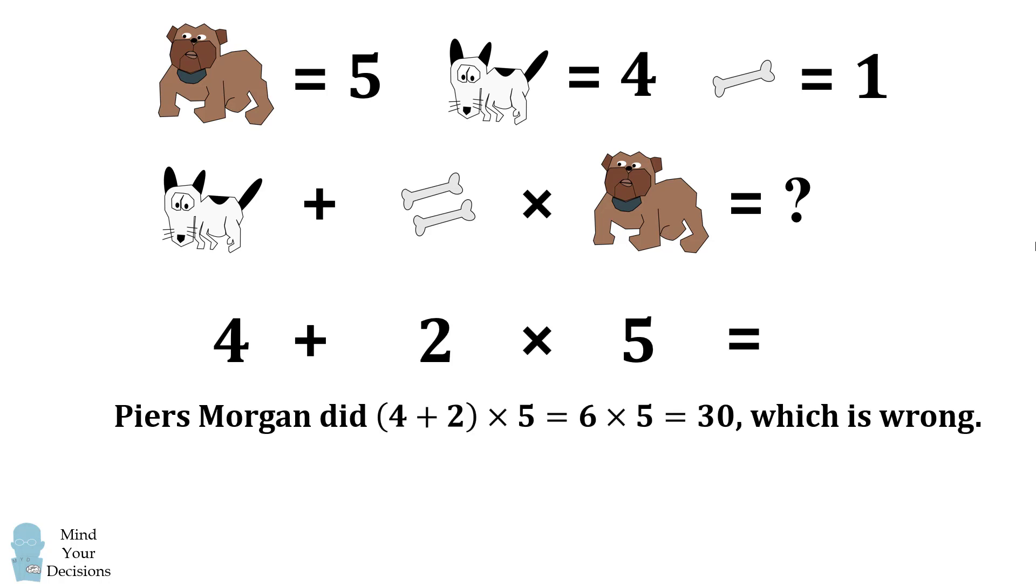Well, Piers Morgan incorrectly did the quantity four plus two times five. He just went from left to right and he got six times five which is equal to thirty.